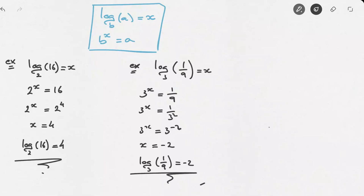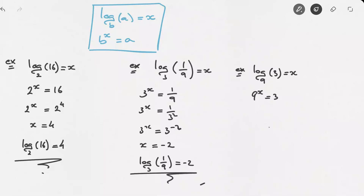Now let's look at one more example. Let's say we were asked to calculate log base 9 of 3, and we'll say equals to x again. To begin with, let's rewrite this in exponential form. In this case, since the base is 9, that would be 9 raised to the power of x equals to 3. Just as for the two previous examples, the trick here is to make sure that both sides of this equation are written as powers of the same base.